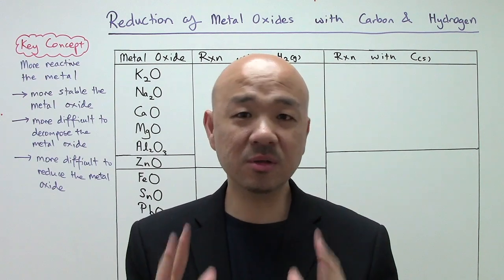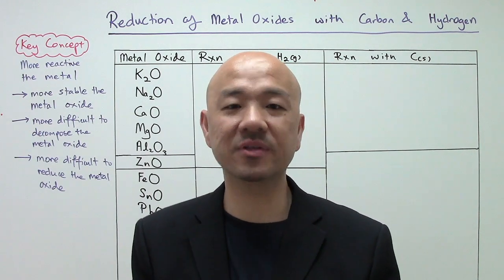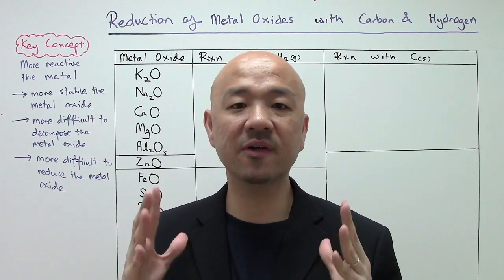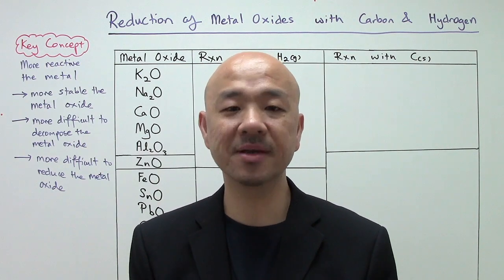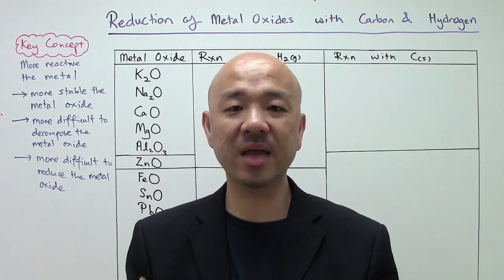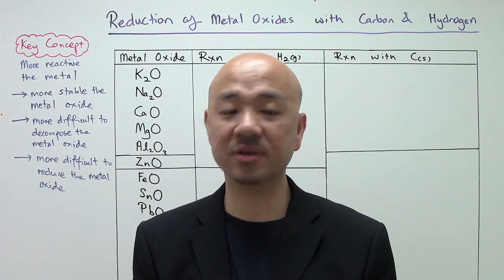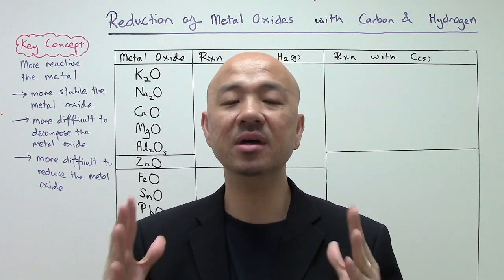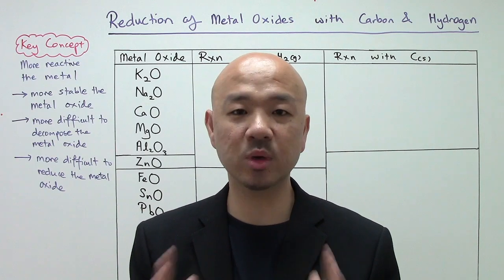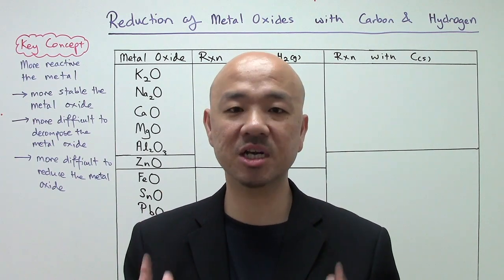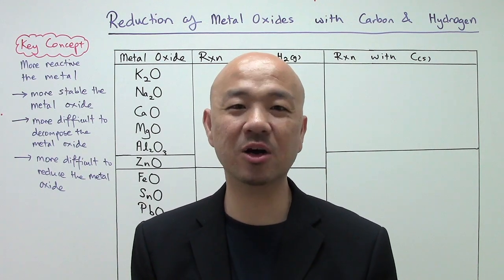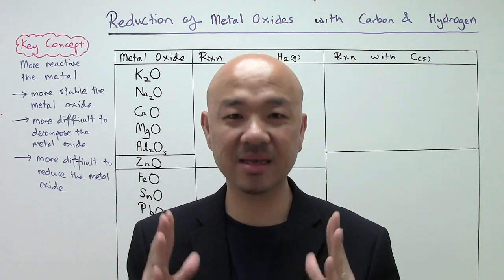We have also looked at the first application of the reactivity series of metals in terms of the metal displacement reactions. Today we look at another application of the reactivity series — the reduction of metal oxides with reducing agents such as hydrogen gas and carbon. Let's take a look at the key concepts involved.